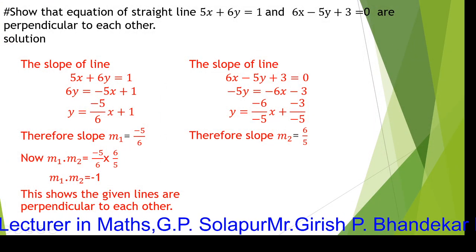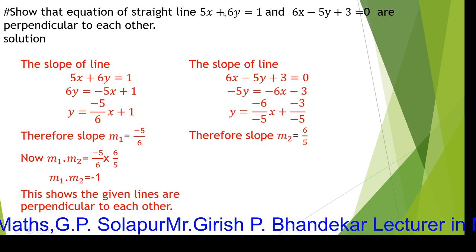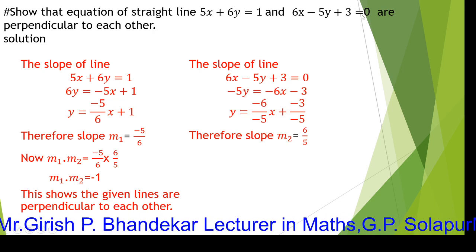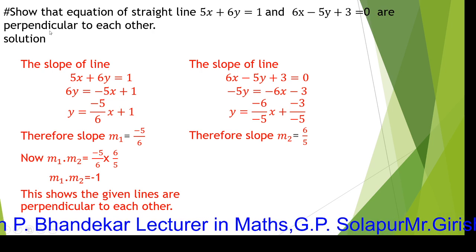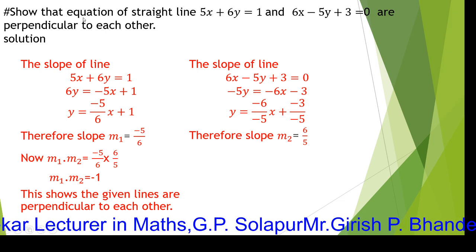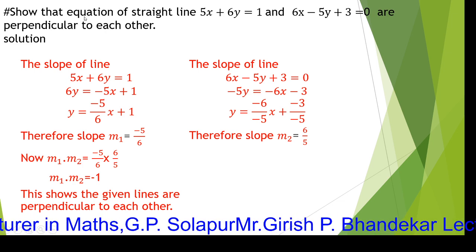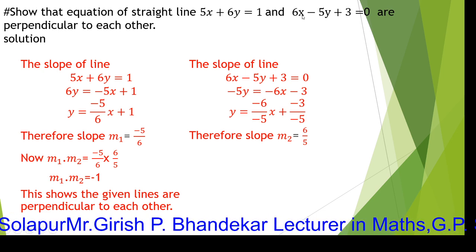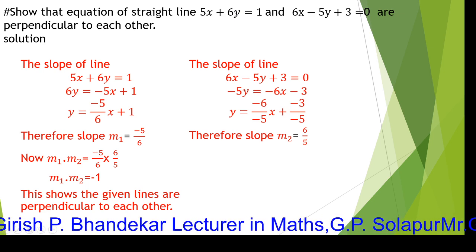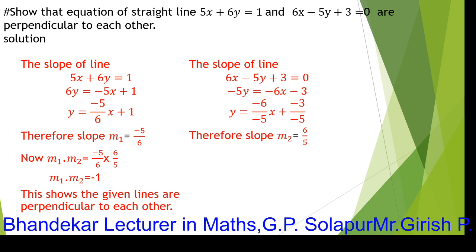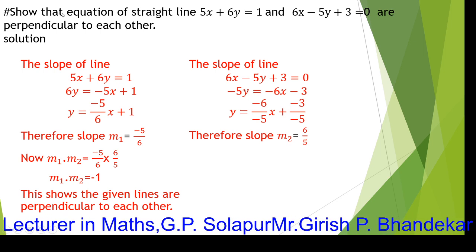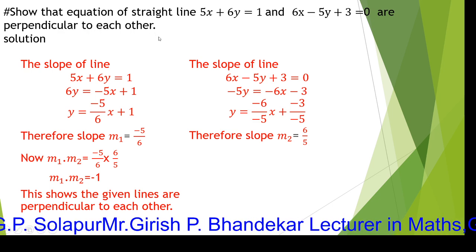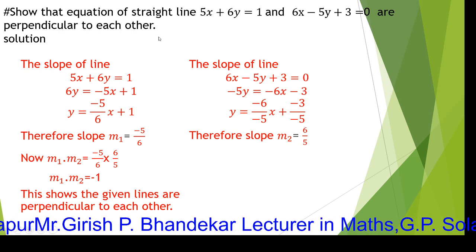First question: show that the equations of straight lines 5x plus 6y equals 1 and 6x minus 5y plus 3 equals 0 represent lines that are perpendicular to each other. Now we are going to find the slopes of both lines.